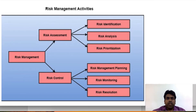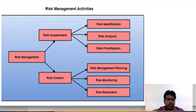Risk management has basically two main activities. First one is risk assessment and second one is risk control. In the assessment part, there are various processes: risk identification, risk analysis, and risk prioritization. In the case of controlling the risk, there will be risk management planning, risk monitoring, and risk resolution.